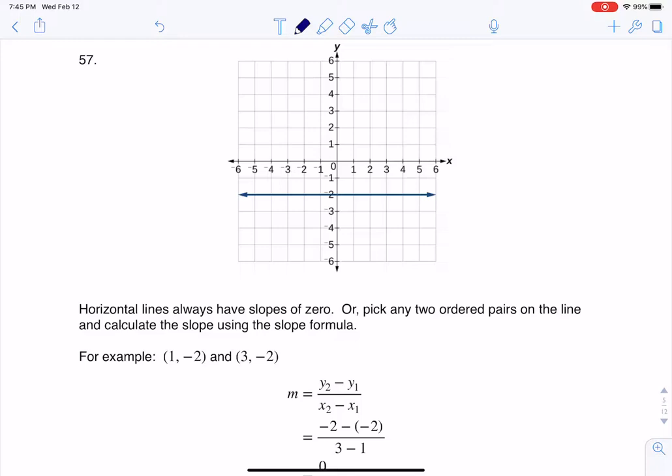There's a couple ways to look at this. If you remember back from your math days, anytime you have a horizontal line, we know that the slope is zero because there is no rise over run. Your rise is always zero.